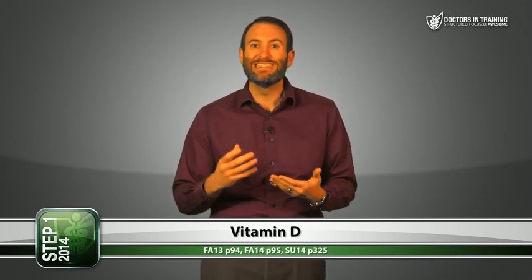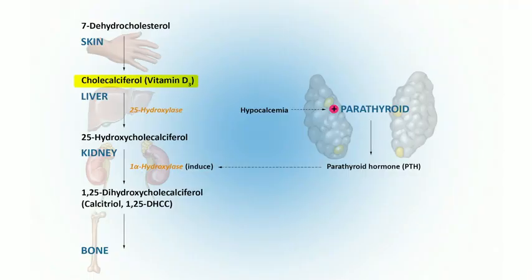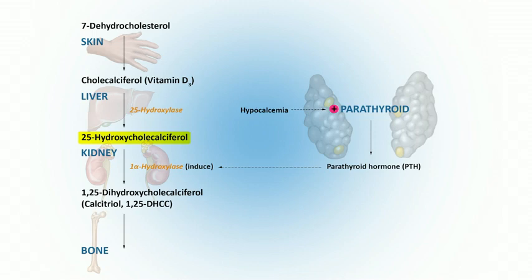First, we have ergocalciferol — this is D2, the ingested form of vitamin D, usually from plants. Next, we have cholecalciferol, vitamin D3, which is added to fortified milk and is also synthesized in sun-exposed skin. In the liver, D3 and D2 are converted by the enzyme 25-hydroxylase to 25-hydroxyvitamin D, also referred to as 25-OH vitamin D or calcidiol. This is what is measured most often when checking patients for their vitamin D status. Then in the kidney, that 25-OH vitamin D is further hydroxylated to 1,25-dihydroxyvitamin D — sometimes called 1,25-OH vitamin D or calcitriol.